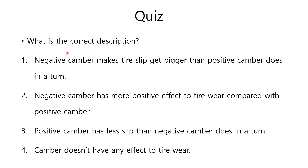Here I have a quiz for you. What is the correct description? Negative camber makes tire slip get bigger than positive camber does in a turn. Negative camber has more positive effect on tire wear compared with positive camber. Positive camber has less slip than negative camber does in a turn. Camber doesn't have any effect on tire wear.